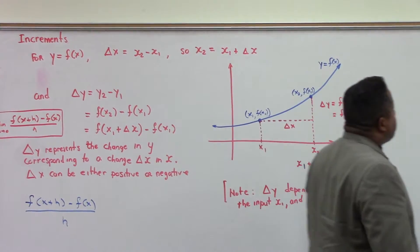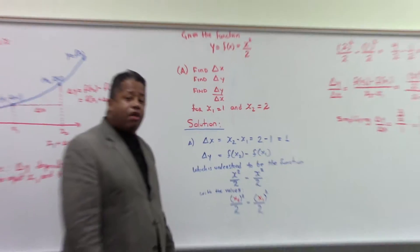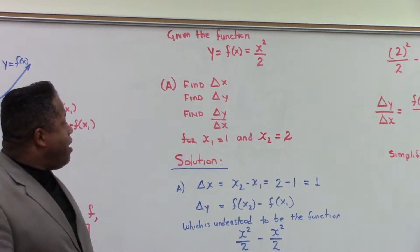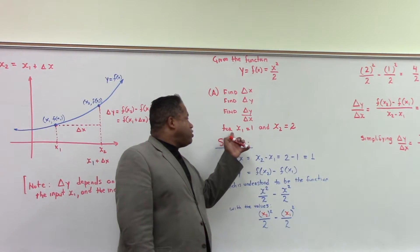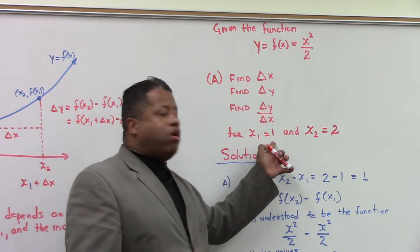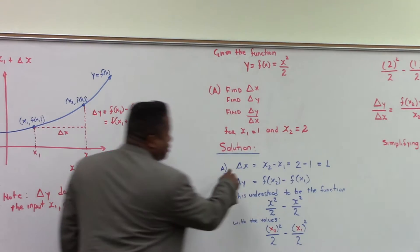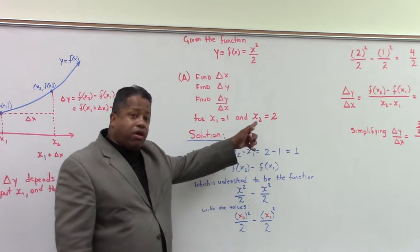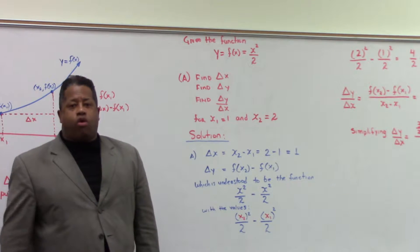Let's look at a problem. Given the function y equals f of x equals x squared divided by 2, we want to find delta x, delta y, and delta y over delta x. For x₁ equal to 1 and x₂ equal to 2, delta x equals x₂ minus x₁, which is 2 minus 1, so delta x equals 1.